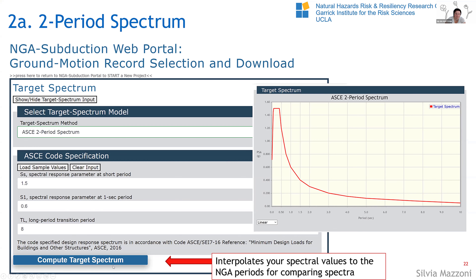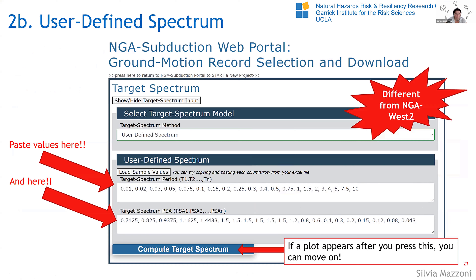Once you're happy with the input, you press the button to compute the target spectrum. For the user-defined spectrum, now you just paste values from your Excel sheet. The input required is in rows, comma separated. I've tried to make it forgiving — if you paste column values for the two variables, it will still work. The best way to test it is to press 'compute target spectrum' — if a plot appears, you've done it the right way. I find this much easier than having to download a sample file, edit it, and upload it.